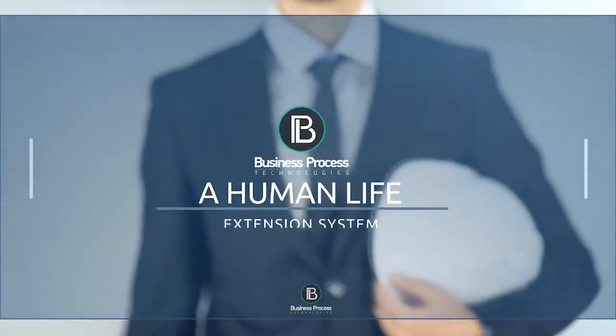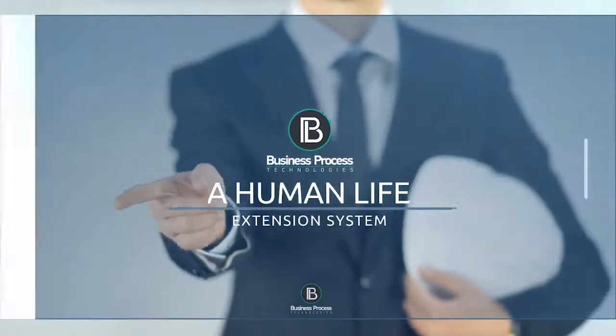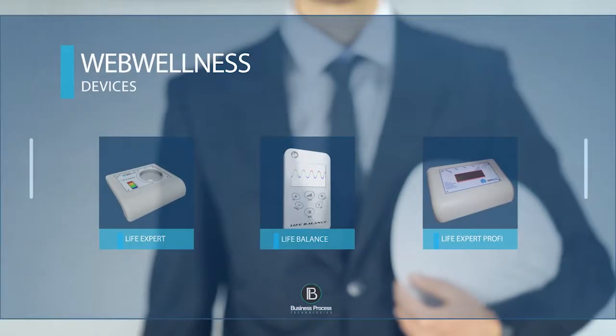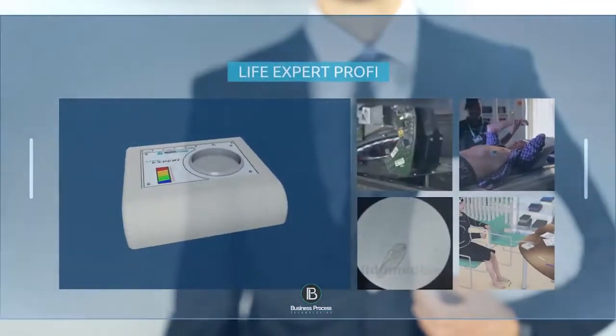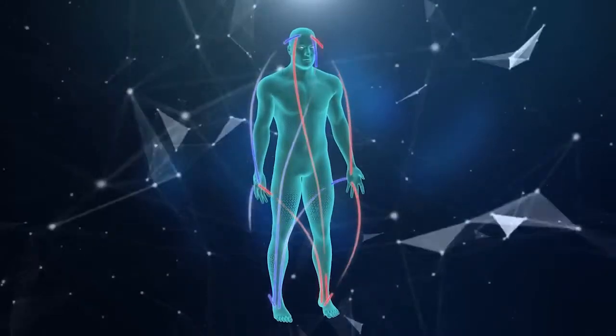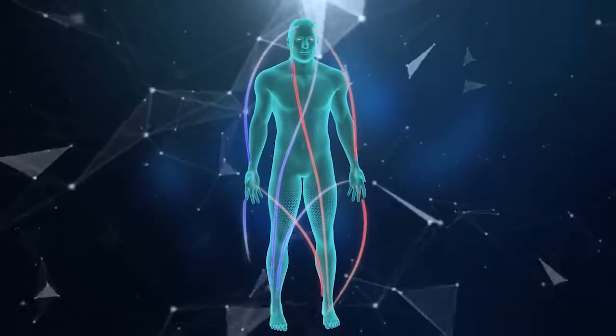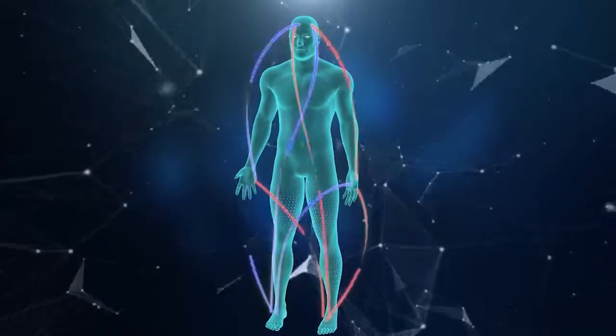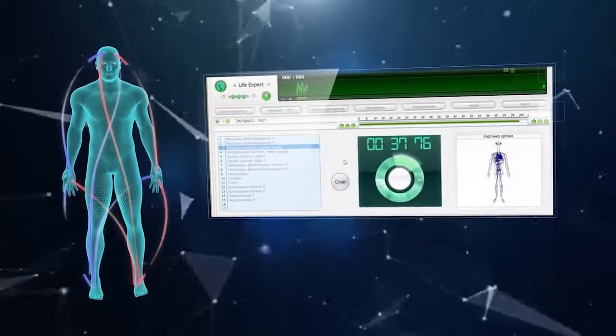The Web Wellness product range includes the following devices. Life Expert: This device was developed for rapid body scanning. By using electrodes, Life Expert measures cutaneous electrical resistance in biologically active zones, and by using specific software, transforms readings into a digital code and then transmits it to the processing server.